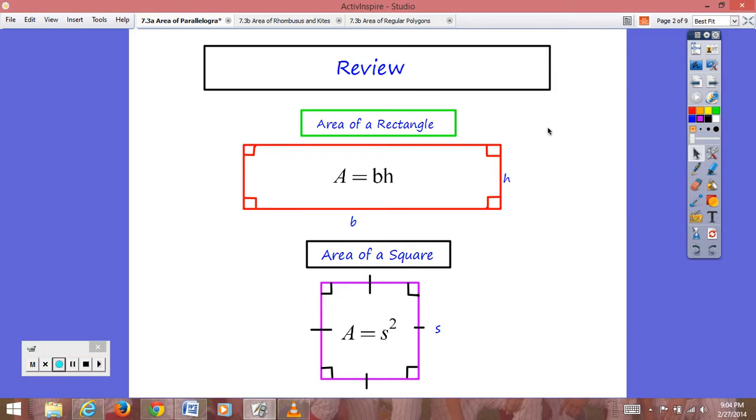So, just a quick review. Area of a rectangle is base times height, length times width, one and the same. If this is our base, this is our height. Area of a square: we have four congruent sides, so if this side is length s, our area is going to be s squared, and in all reality it is again just base times height, if we were to think of it that way.